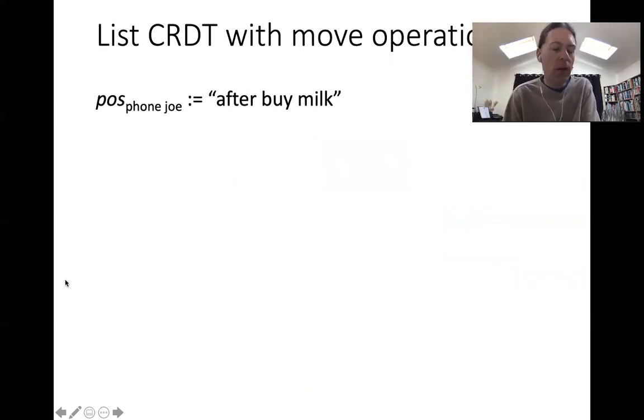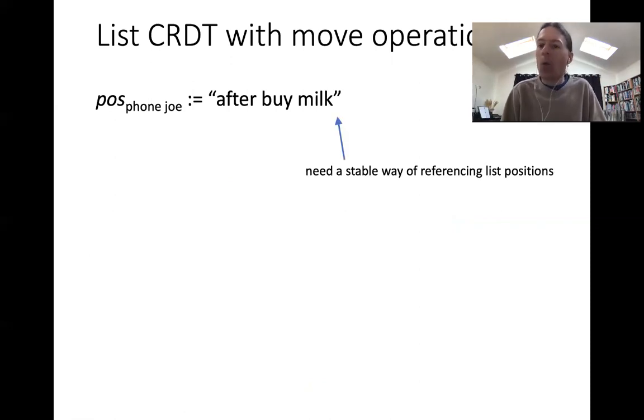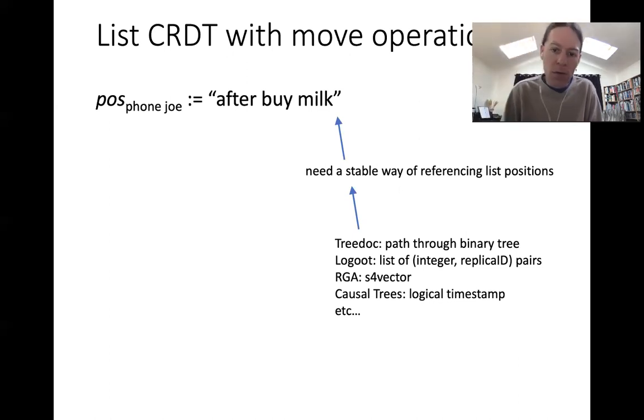Now we have to make this a little bit more technical. The first thing we need is some way of describing positions in the list. Here I've just done this informally with 'after buy milk,' but really what we need is some stable way of referencing positions in the list. That problem has been solved for us because all of the list CRDTs—whether it's Treedoc, Logoot, causal trees, or anything—they have some stable way of generating identifiers that refer to particular positions in the list. Those identifiers are stable in the sense that, unlike list indexes, they don't change if insertions and deletions happen around them. This means we can put one of those position identifiers as the contents of our last-writer-wins register, and that gives us a clear way of referencing the position of a particular list item.